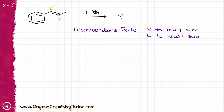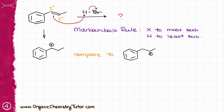If I go through the mechanism of this reaction, my first step is going to be the electrophilic attack from the double bond onto my HBr. HBr is going to be an electrophile, and the double bond — the pi bond — is going to be a nucleophile. This electrophilic attack can give me two possible carbocations: I have a secondary carbocation on the left side, and I have a secondary carbocation on the right side.